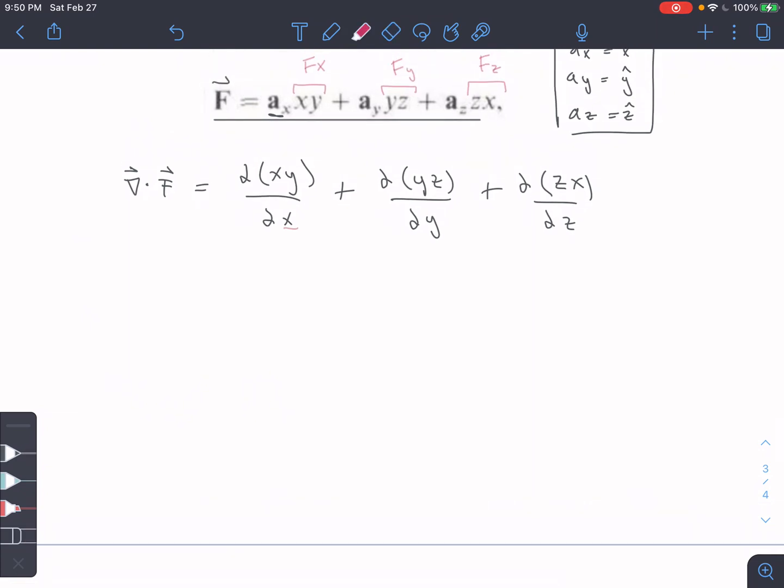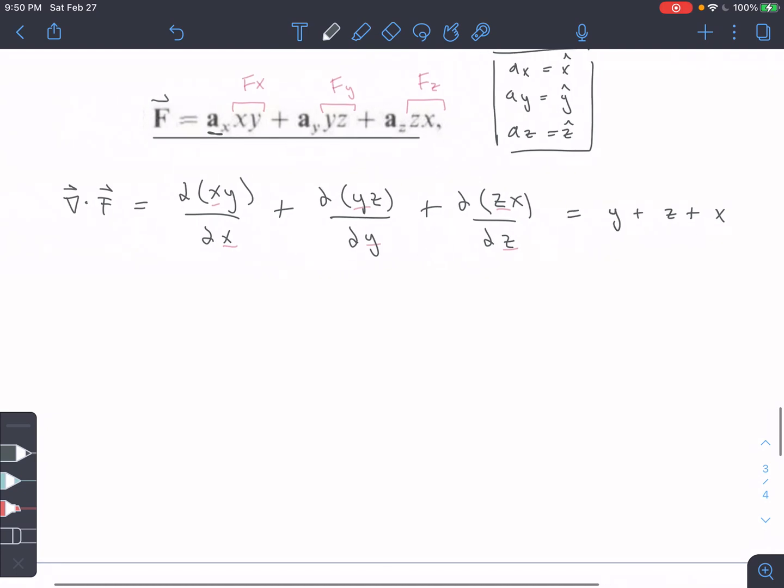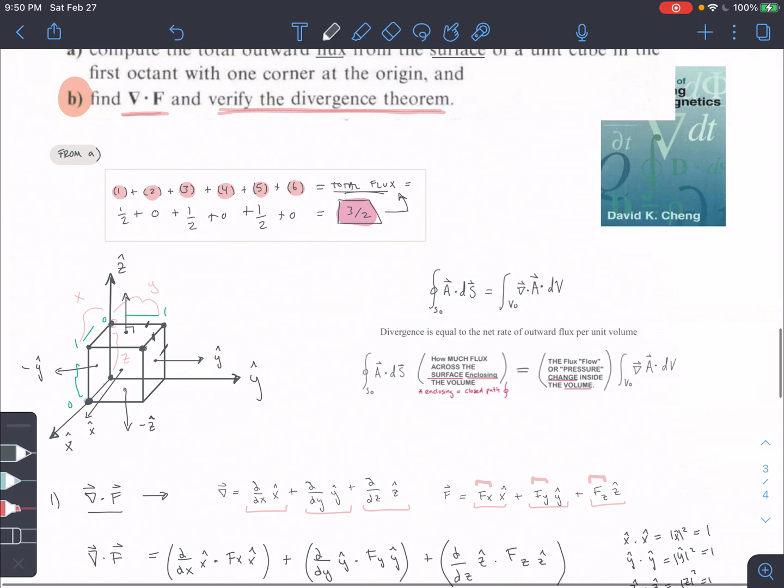I'm just going to erase that quick. All right, so x, I care about x, y, I care about y, z, I care about z. Everything else is a constant. So I'm going to end up with y plus z plus x. So that's my solution here for this guy. All right, so we got through part one. So we found this part.